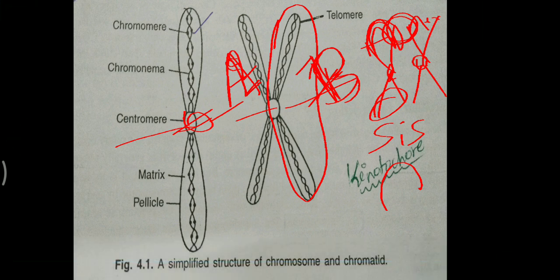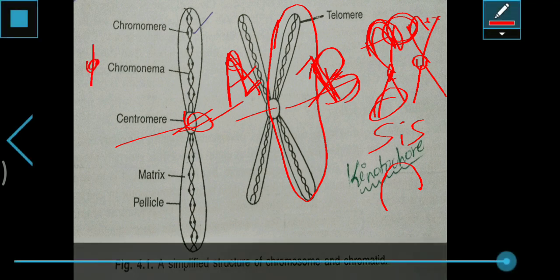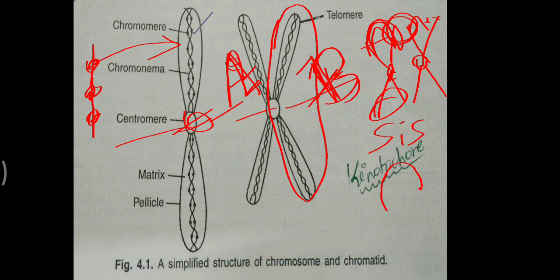Coming to chromomeres — chromomeres are linearly aligned bead-like structures found on the chromosomes. As you can see here, these bead-like structures are called chromomeres. They are clearly visible in polytene chromosomes. Available evidence indicates that the centromere represents a unit of DNA replication, chromosome coiling, RNA synthesis, and RNA processing.